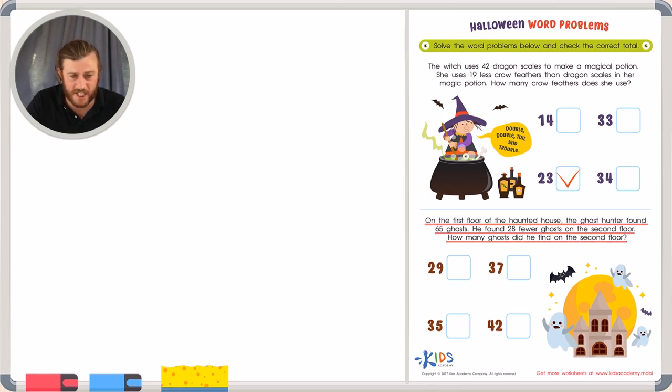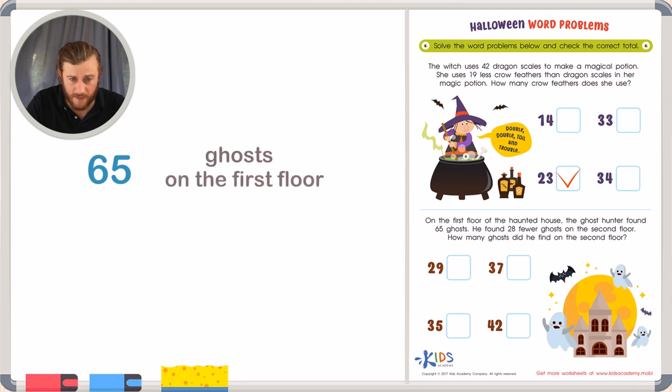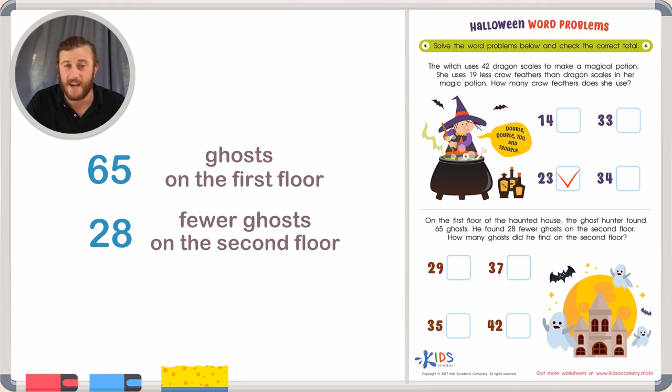Okay, so I know he found 65 ghosts on the first floor. He also found 28 fewer ghosts on the second floor. Now again, when I see the word fewer, my mind immediately thinks fewer, less than. We're taking away. So that must mean subtraction. So for this problem,